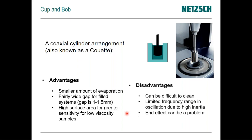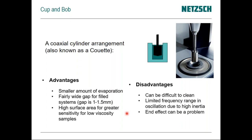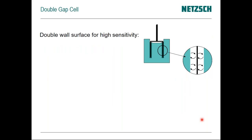The disadvantages of cup and bob: the sample must be cleaned out of the cup, which is tough for very viscous or sticky materials like tar. For oscillation, rotating the large bob back and forth introduces more inertia, which can affect data. Also, with a narrow gap the end effect — the stress on the bottom of the bob — could potentially be an issue, though it's usually not significant. The most sensitive geometry is the double gap cell, which has a hollow cylinder dipping into an annulus and measures both the outside and inside surfaces — almost double the surface area of a standard cup and bob.